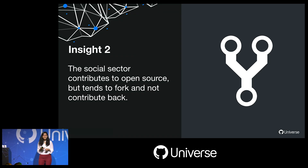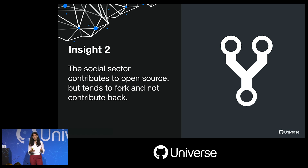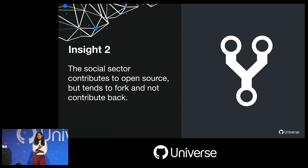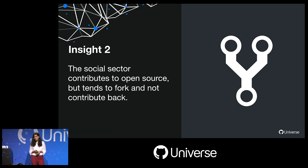The second insight: there are open source projects developed by the social sector, and some successful ones. However, the majority of the time, social sector organizations and developers will download, fork the code, use it for their own individual use case, update it, but then will not contribute it back to the main source code to benefit the wider sector. We see this as a missed opportunity in cross-organizational collaboration in technology that could benefit very important social sector use cases.